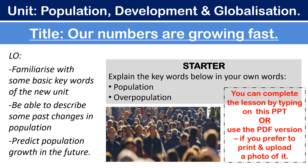Hopefully you have an idea that when we're talking about population, we're talking about numbers of people — the number of people within a place. We could have the population of Bishop Chaloner, which I believe is about 1,600 students, or we could have the population of London, or the UK, or the world. So it's the number of people living in a specific place.